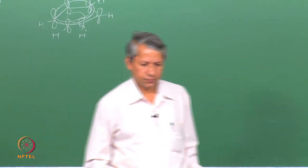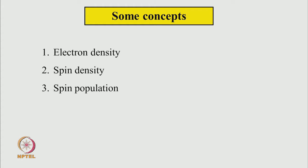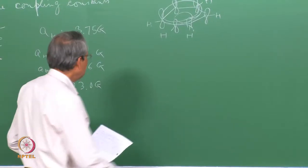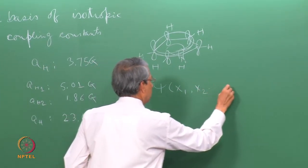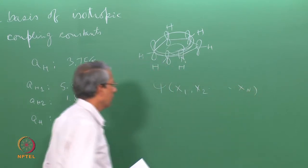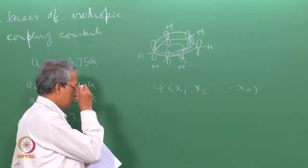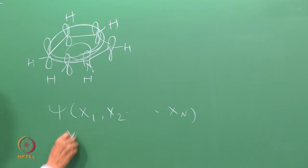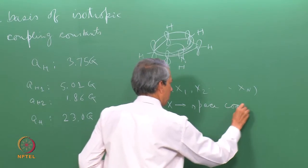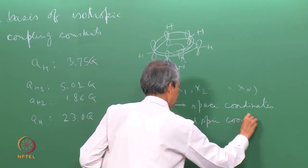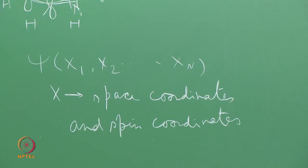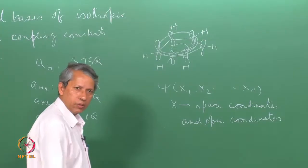We need to understand a few simple key concepts: electron density, spin density, and spin population. If we have an n-electron system, they are given by a wave function with coordinates of all the electrons. This coordinate x includes the space coordinate and spin coordinate — whether it is alpha or beta spin — and this should have all information about the system.